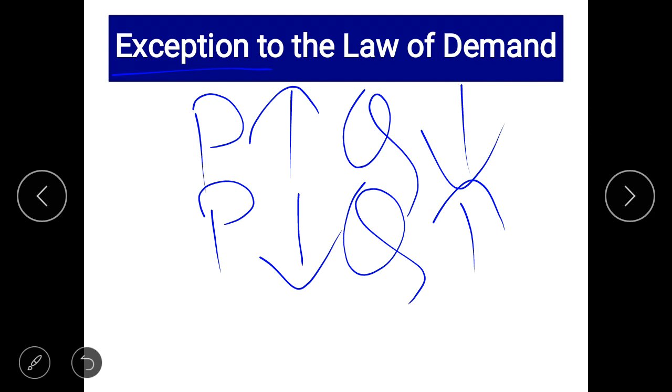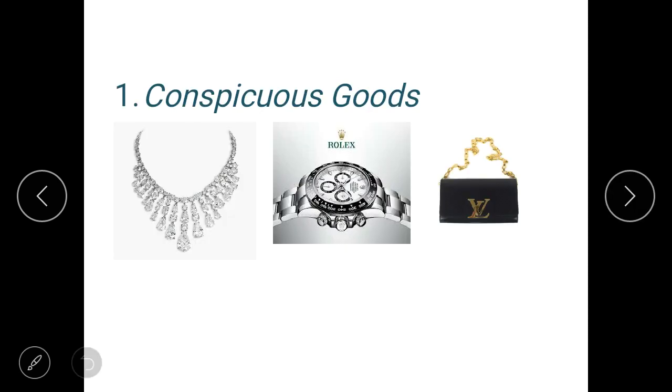So let us look at them one by one. The first one is your conspicuous goods. Conspicuous goods are your very expensive, high brand, luxurious goods which are demanded by the rich. Now these goods they are valuable because they are exclusive. Only a few people can afford them. They can be your expensive diamond, an expensive watch, or a designer bag.